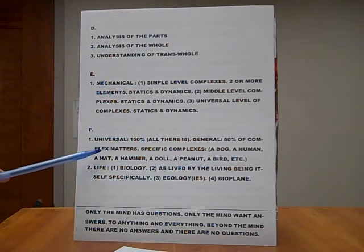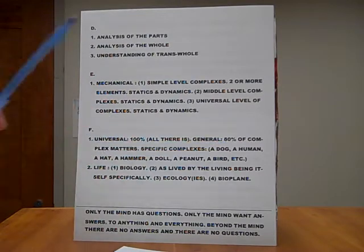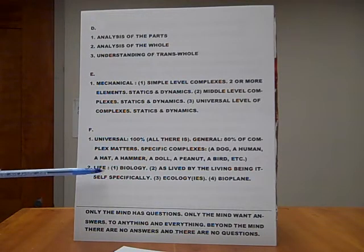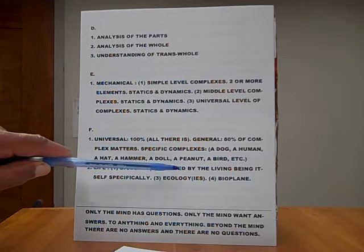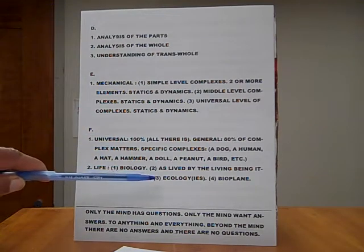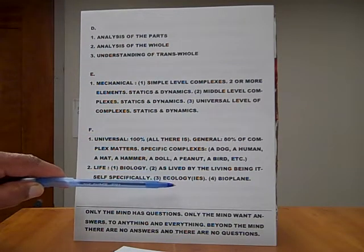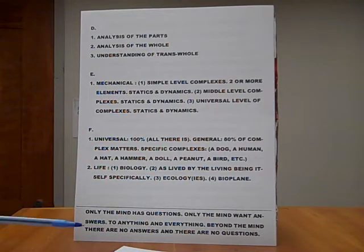The next one is general. Eighty percent of complex matters. Then the third one is specific complexes, such as a dog, a human, a hat, a hammer, a doll, a peanut, a bird, etc. Number two, life. Life is, number one, biology. Two, as lived by the living being itself. Specifically, that's you. Number three, ecology or ecologies. And number four, bioplane.